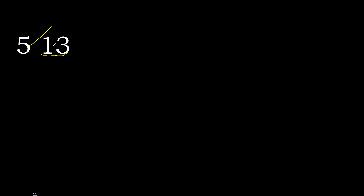5 multiplied by 3 is 15, which is greater. 5 multiplied by 2 is 10; 10 is not greater. So 13 minus 10 is 3. Next, there is no next digit, therefore we complete — always complete with a 0 here, with a decimal point.